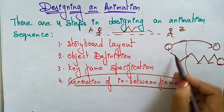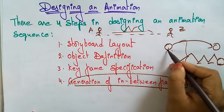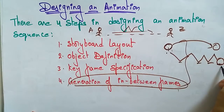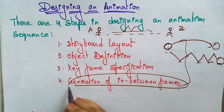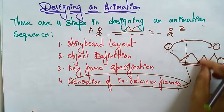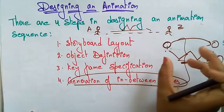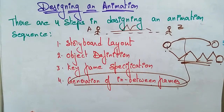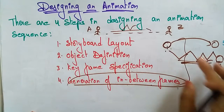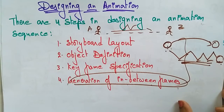Next is the object definition: what type of ball am I using, what color? That is the object definition. Then keyframe specification: where am I starting and where am I ending? Finally, generation of in-between frames: how the ball bounces — all of that is done by the computer automatically. You provide the storyboard, object definitions, and keyframe specifications, and the in-between frames are generated by the computer.